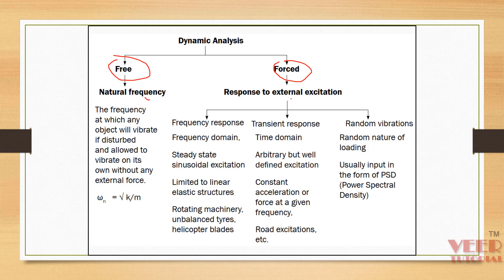In these types of analysis, we have multiple types of domains: frequency response, transient response, and random response. Frequency response is considered for rotating machinery, unbalanced tires, and helicopter blades. Transient analysis is for road excitation. Similarly, we perform PSD or power spectral density analysis.